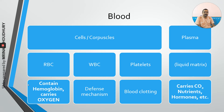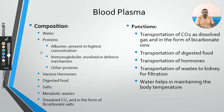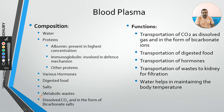The liquid matrix of blood is called plasma. It is basically made up of water, but many things are dissolved in it. The primary protein present in high concentration is albumin. Immunoglobulin is another protein present, responsible for the defense mechanism. Other substances include hormones, digested food, various salts, and metabolic wastes produced by metabolic reactions.